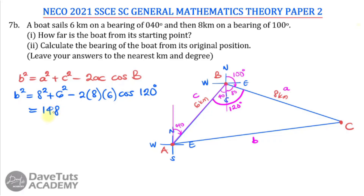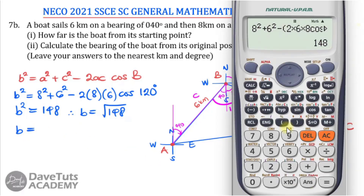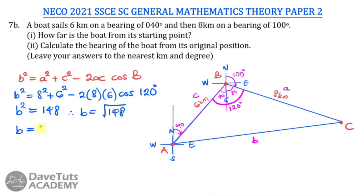Evaluating: 8² + 6² − 2 × 8 × 6 × cos(120°) = 148, so b² = 148 and b = √148 = 2√37 ≈ 12.1655, which we round to 12.17 km. To the nearest kilometer, the boat is approximately 12 km from the starting point.